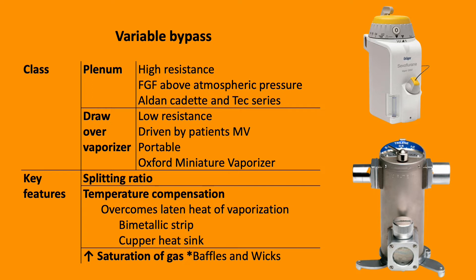Draw-over vaporizers are low resistance, driven by the patient's minute ventilation — they are portable. An example is the Oxford Miniature Vaporizer, shown in the bottom right corner. The key features of a plenum vaporizer are: splitting ratio, temperature compensation with the bimetallic strip and copper heatsink, and the importance of saturation of the gas via baffles and wicks.